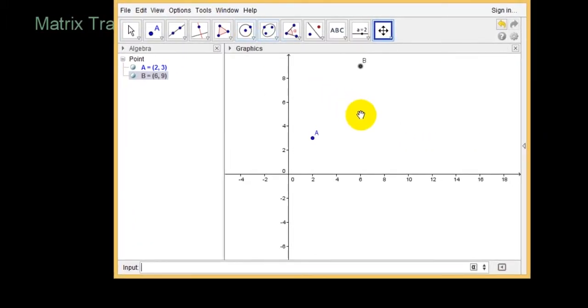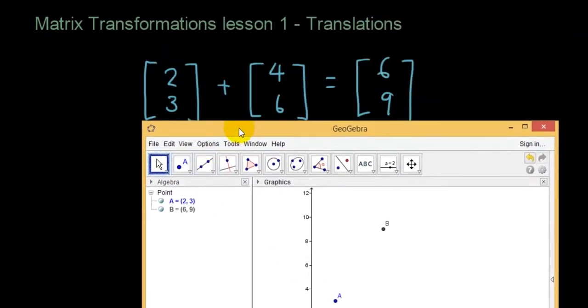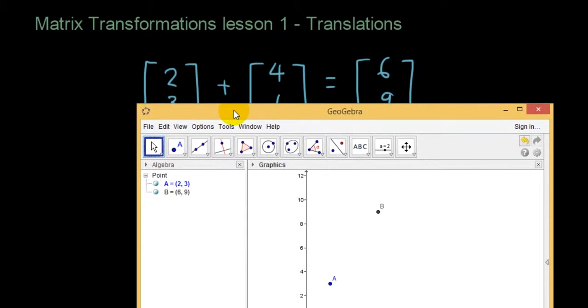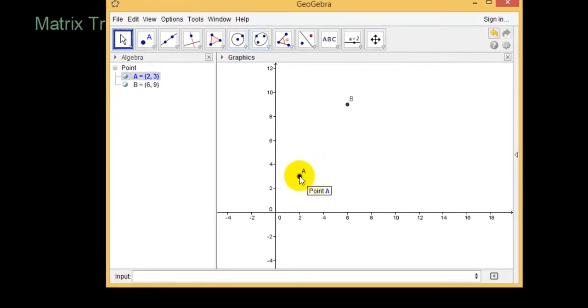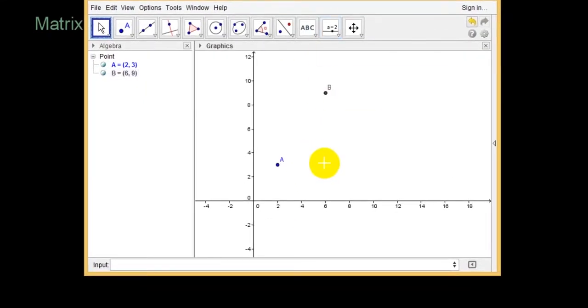Okay so let's have a look at what's happened here. It has moved 4 units to the right. This point has moved 4 units to the right from x equals 2 to x equals 6 and it has moved 6 units upwards from 3 to 9. So that is basically the concept of a translation.